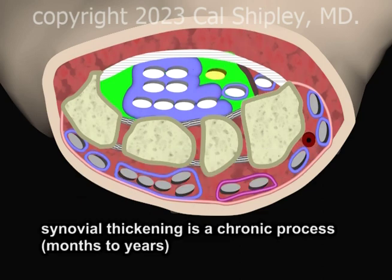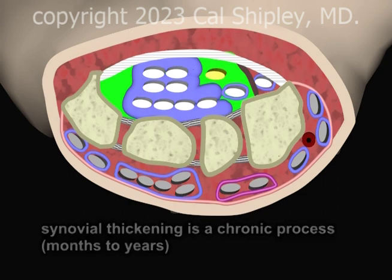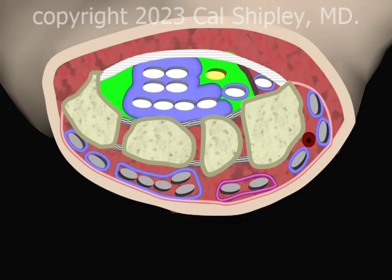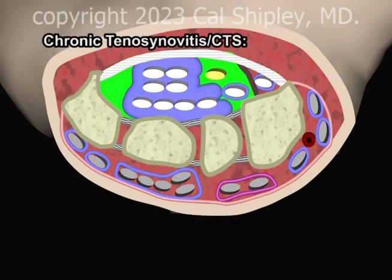The thickening of synovial sheaths is a chronic process which takes place over months or years. Swelling and inflammation of the synovial sheaths is termed tenosynovitis. There appear to be several risk factors underlying the onset of chronic tenosynovitis and subsequent carpal tunnel syndrome due to median nerve compression.